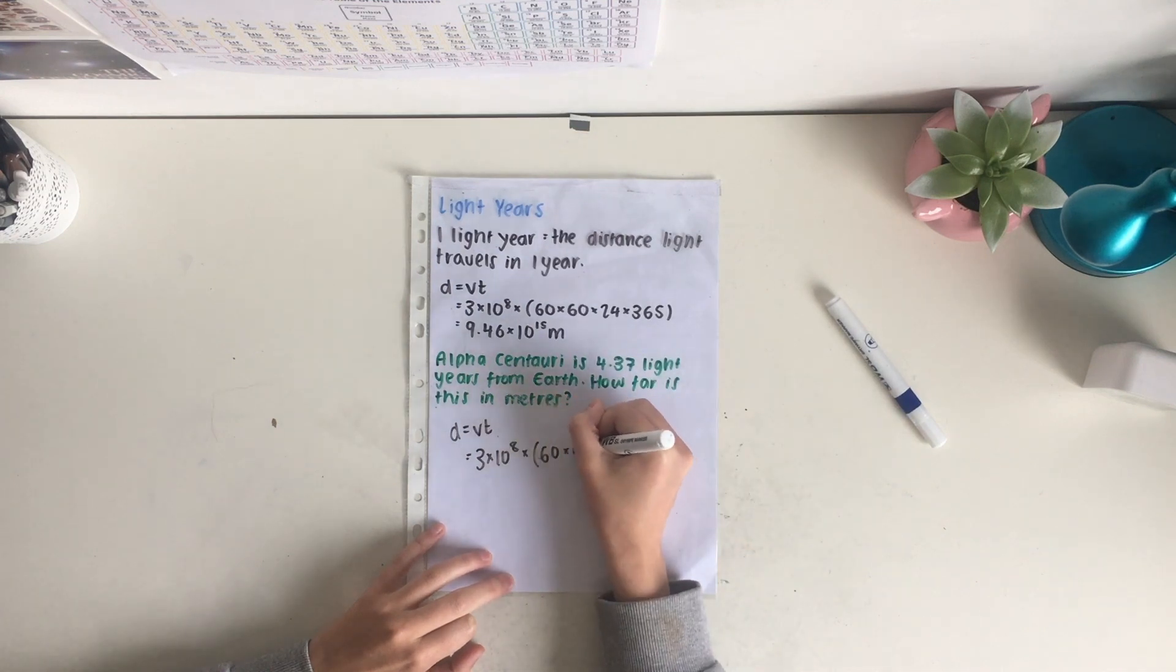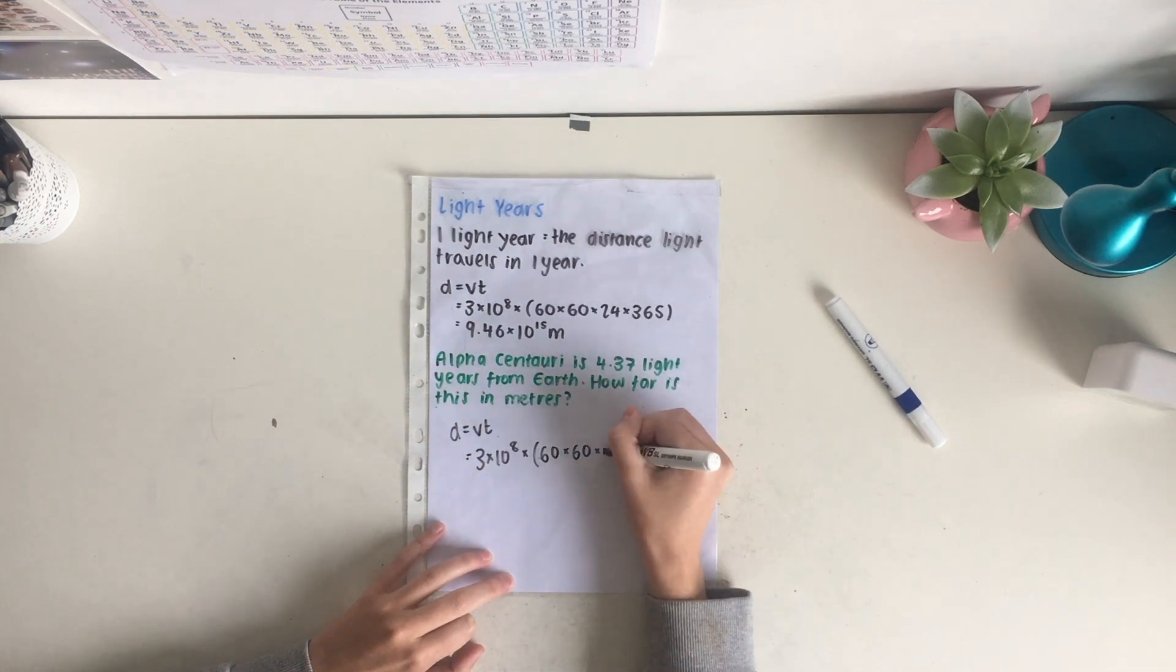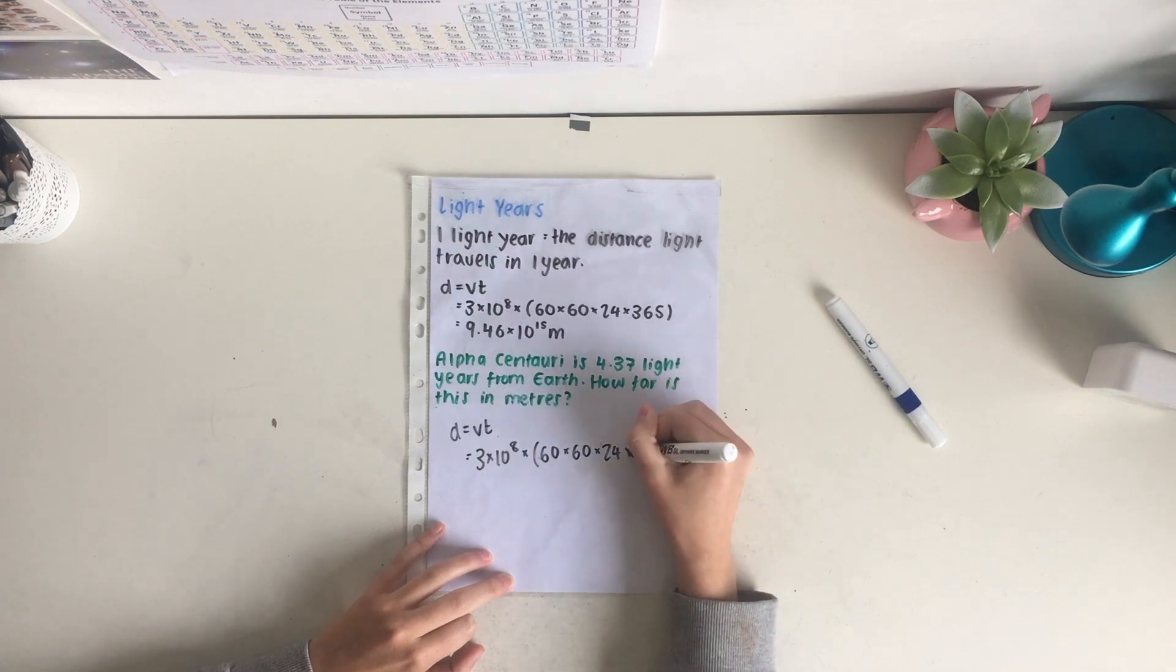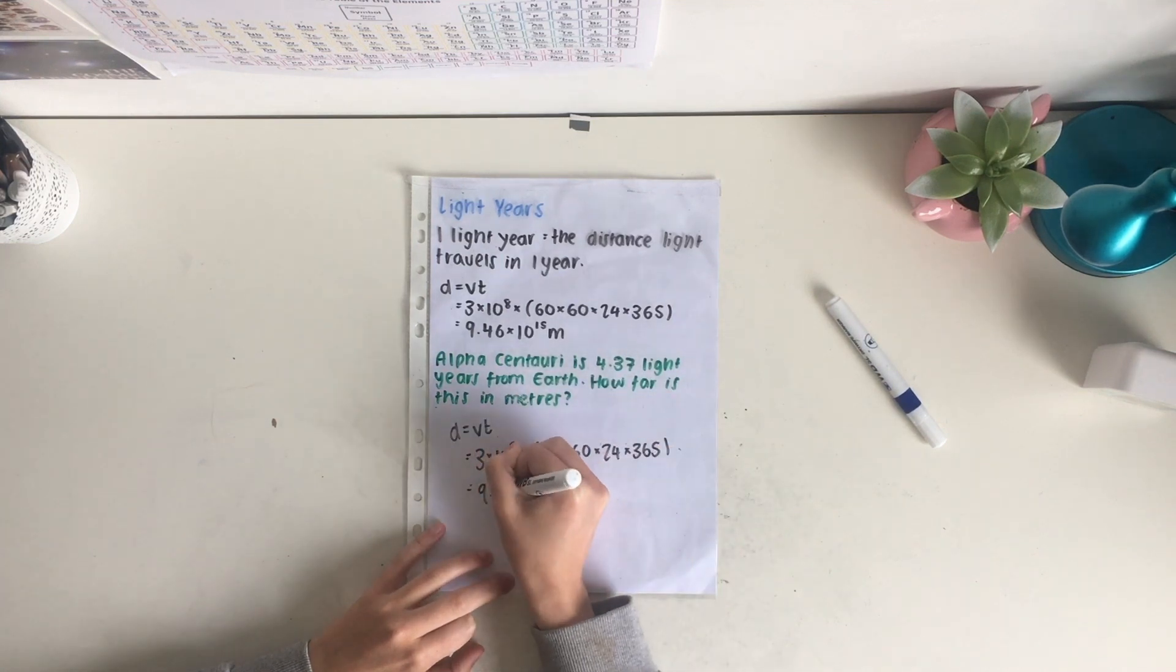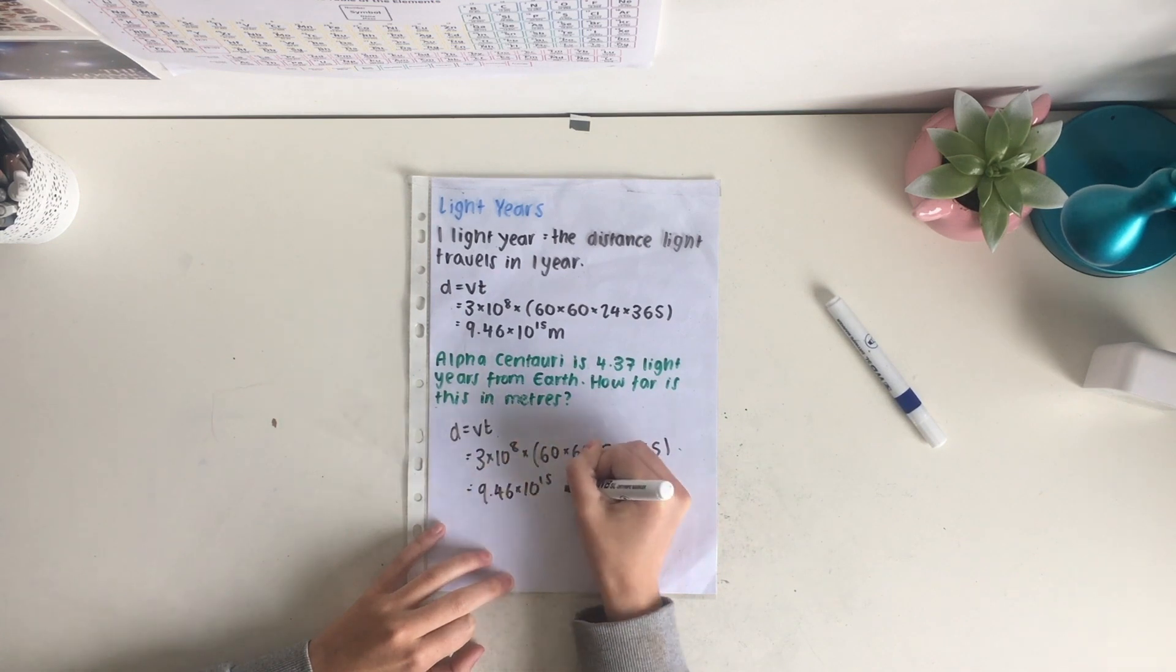60 seconds in a minute, 60 minutes in an hour, 24 hours in a day, and then 365 days in one year. To give us this value of 9.46 times 10 to the 15, and that is one light year.